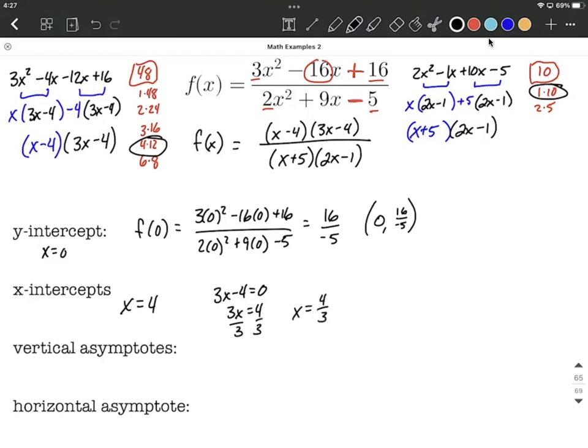As ordered pairs, these are going to look like x value of 4, and that made the whole function have an output of 0. 4 thirds was our second x value with an output of 0 as well. That's what they look like as ordered pairs.